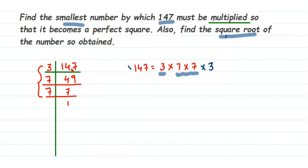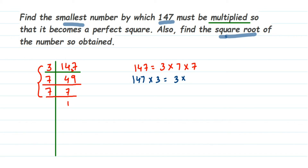So what is missing here? One 3 is missing. If we multiply by 3, then 3 will form a pair. The smallest number to be multiplied is 3. We multiply 3 on both sides: 147 × 3 = 3 × 3 × 7 × 7. The number which is not in a pair is the smallest number we need to multiply by. So 147 × 3 gives us our perfect square.